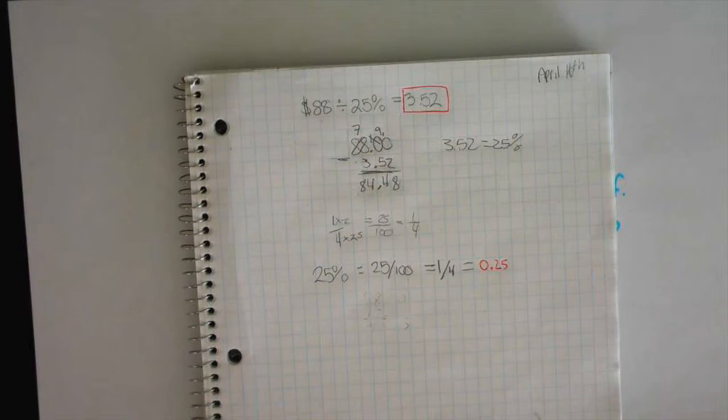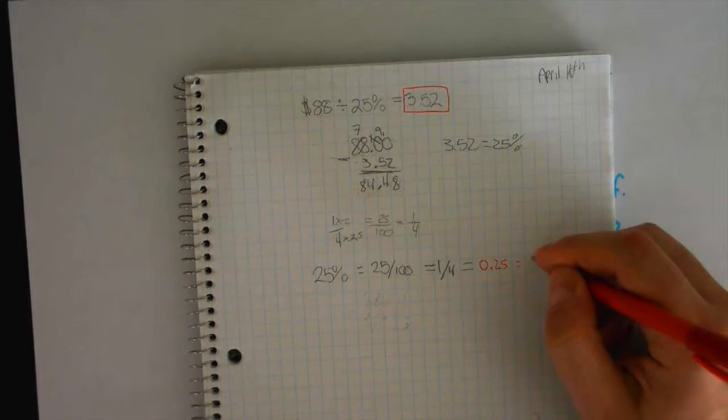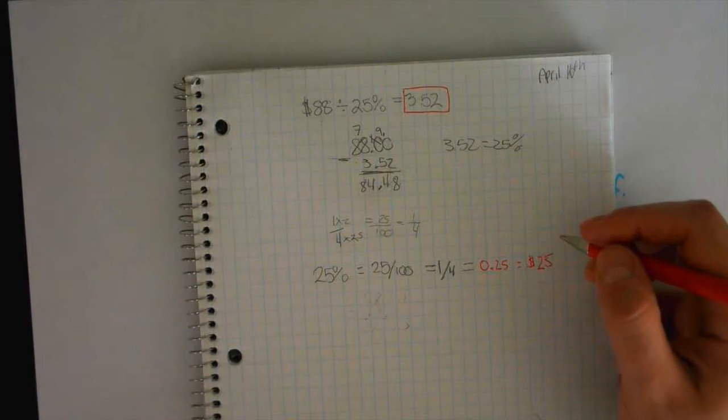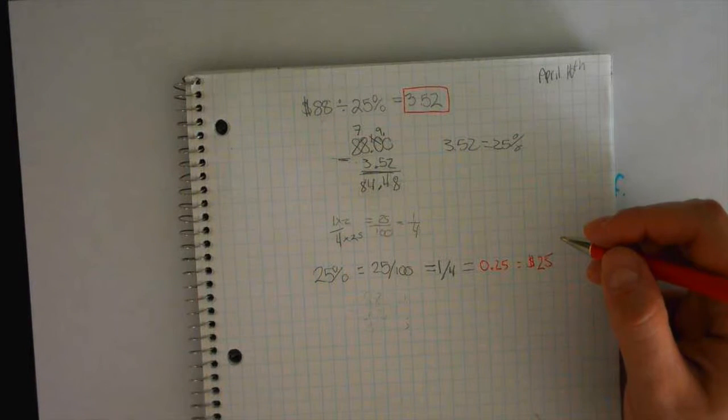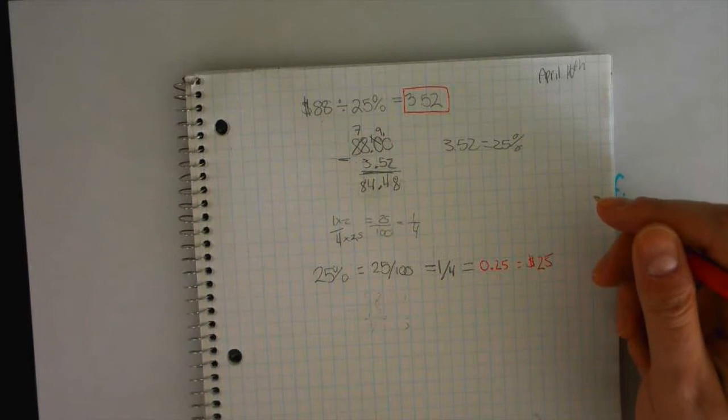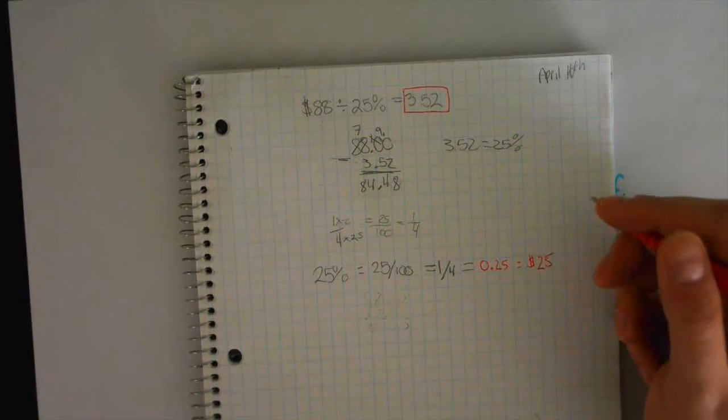So if you have $100 and I take 25% of it, how much money am I taking? I'm taking $25. So these are equivalent values. It's just like quarters. If you have a dollar, you have four quarters. It's 25 cents. A quarter is 25% of a loonie. So it's the same idea.